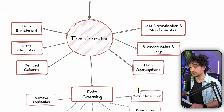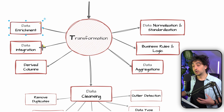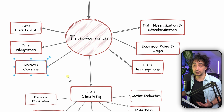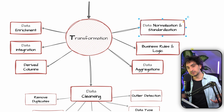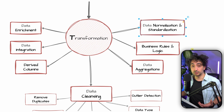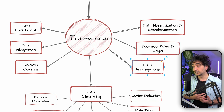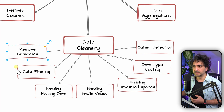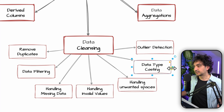For transformations, there is a wide range of possibilities: data enrichment, where we add values to datasets; data integration, combining multiple sources into one data model; deriving new columns from existing ones; data normalization, mapping source codes to more user-friendly values; applying business rules and logic to build new columns; and data aggregation, where we aggregate data to a different granularity.